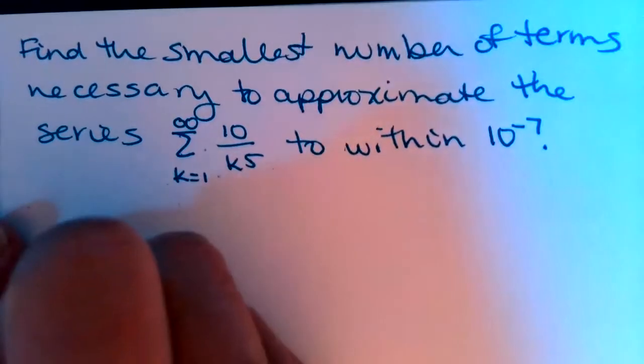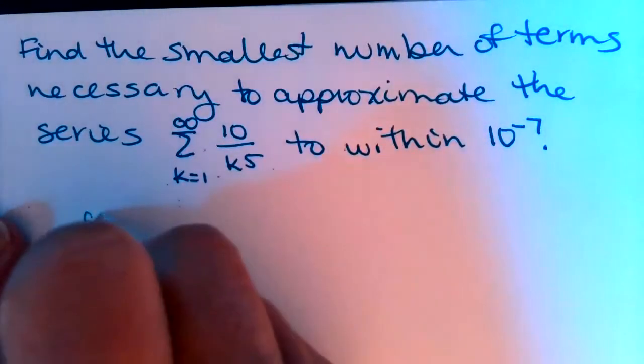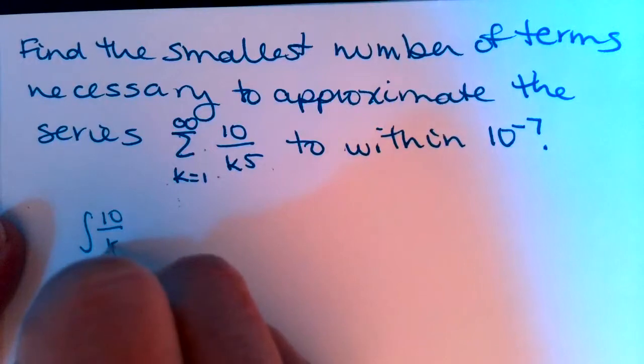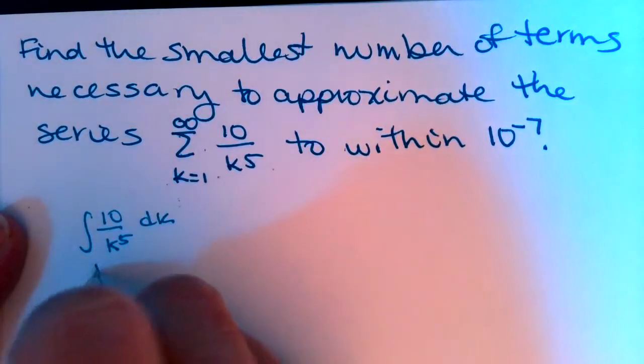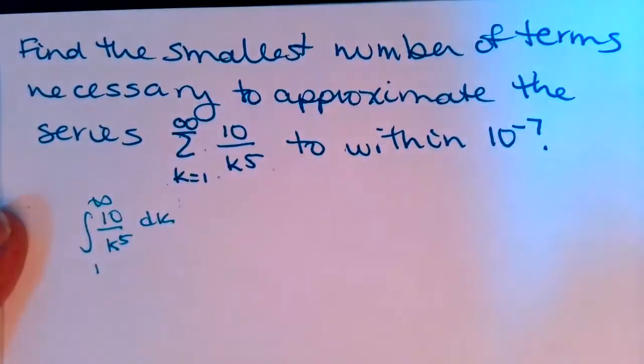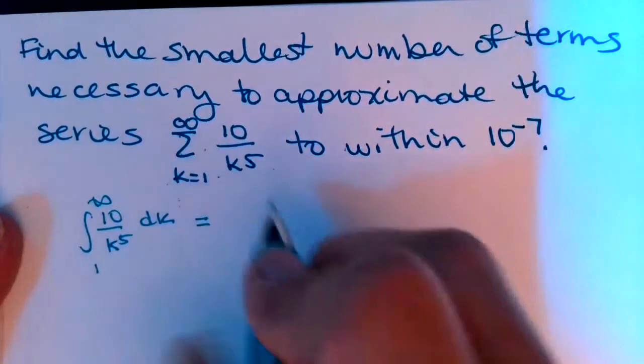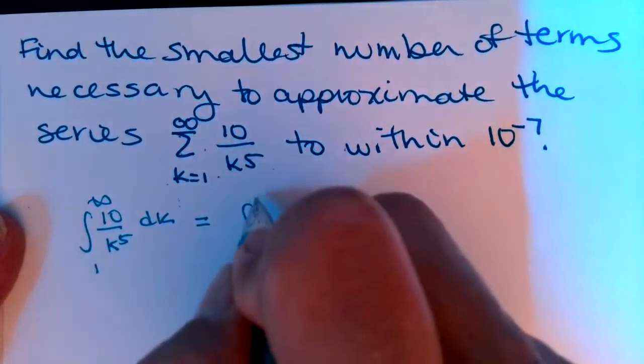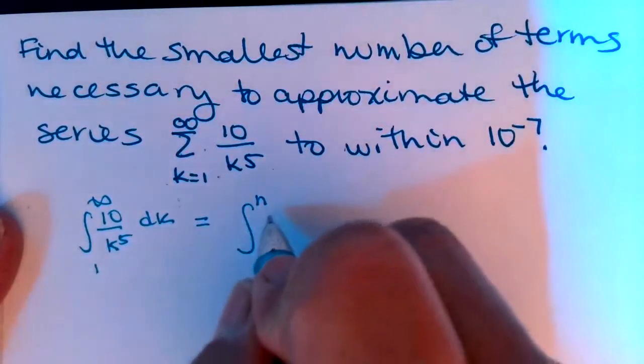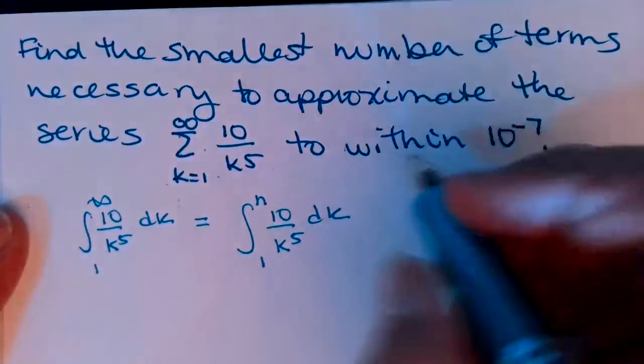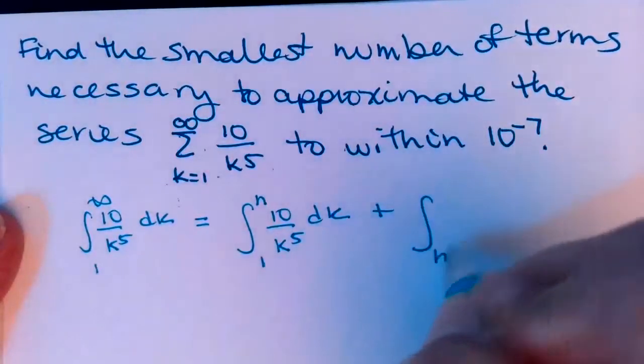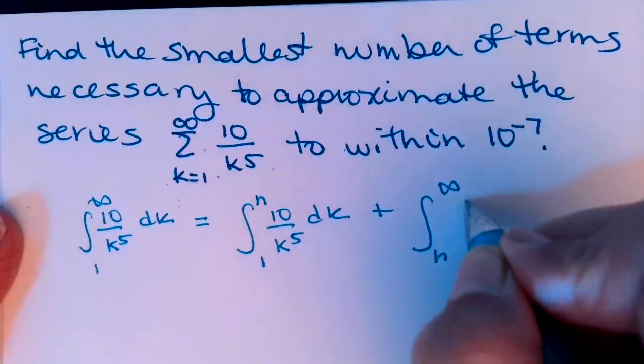So if we just think about the integral of 10 over k to the 5, dk from 1 to infinity, we could break that up into an integral from 1 to n—so I can do the first n terms of the integral—and then I can add up the rest of them from n to infinity.